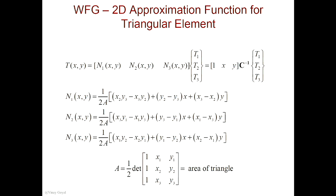The first one is the Kronecker delta property. So if I took N1 — shape function 1 — and I plug in x1, y1 right there, I will get 1. So I'll get 1 for N1 at that node, and then 0 at the other two nodes. That's how the shape function looks like in 3D. Shape function 2, for example, takes a value of 1 at x2, y2, is height 1, but then it's 0 at the other two nodes. The same for shape function 3. So it satisfies the Kronecker delta property.